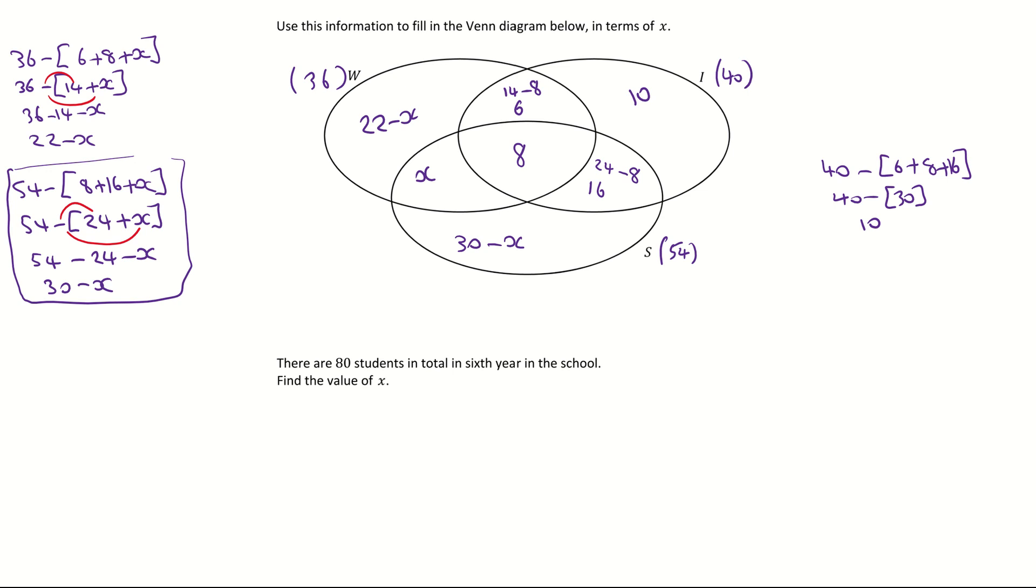Now, it doesn't matter the order you write out your terms. It's up to you entirely. I'm going to start here with the 22 minus X. So it's 22 minus X plus my next term, which is the 6 and the 8. So I'm going to put those two in plus 6 plus 8. Then I'm going to add on the 10 and I'm going to add on the 16. And finally, I need to add in the X and the 30 minus X. Again, good practice to highlight them because that way you will make sure you won't miss one. Remember what this equals. This equals the total amount of students, which is 80. If I add up the 22, the 6, the 8, the 10, the 16, and the 30, that makes 92.